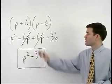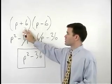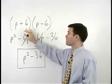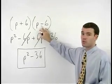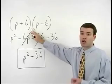If you take a look back at the original problem, notice that these two binomials are identical except that one has a plus in the middle and one has a minus in the middle. These types of binomials are called conjugates.